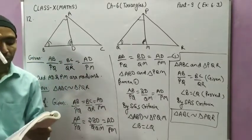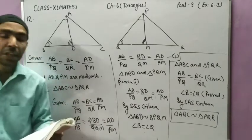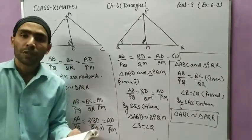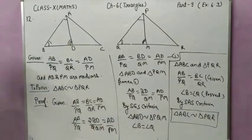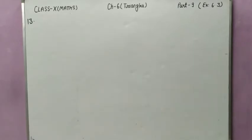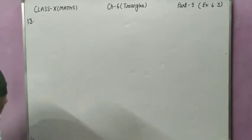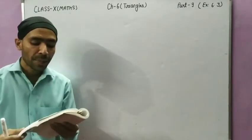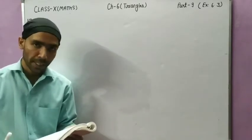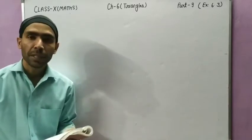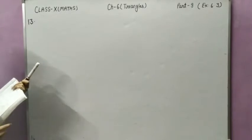We have discussed question number 12. One more question: question number 13. D is a point on the side BC of triangle ABC such that angle ADC equals angle BAC. Show that CA squared equals CB into CD.